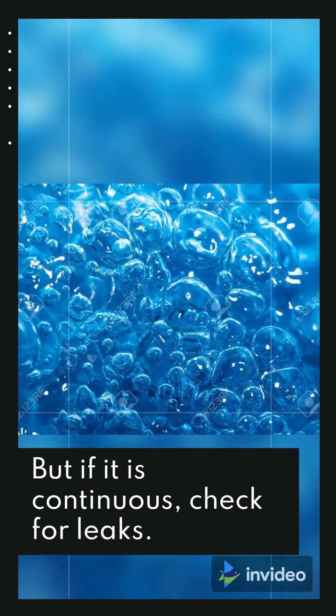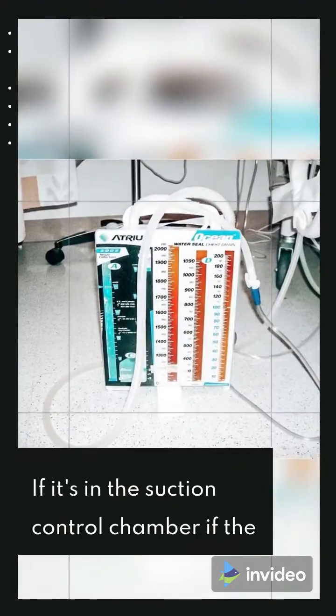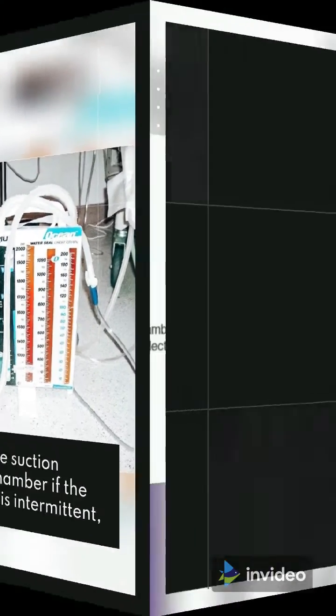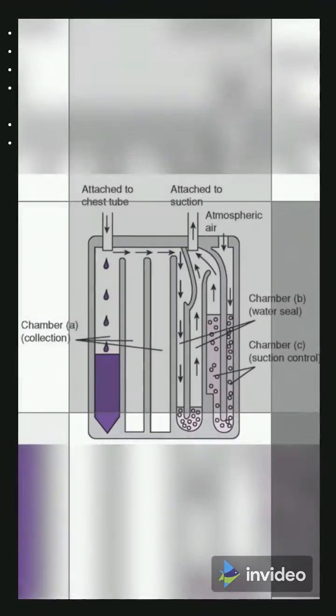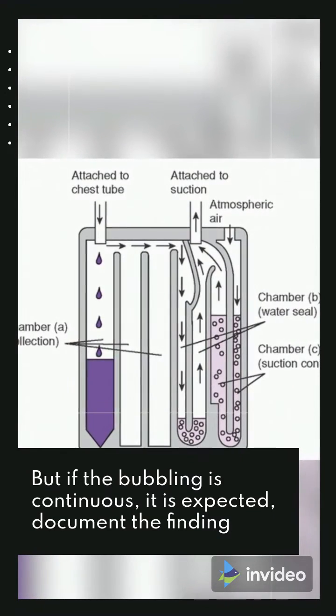But if it is continuous, check for leaks. If it's in the suction control chamber, and if the bubbling is intermittent, increase the suction, it is probably too low. Lastly, if the bubbling is continuous, it is expected, document the finding.